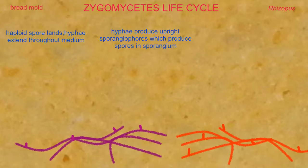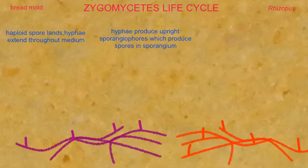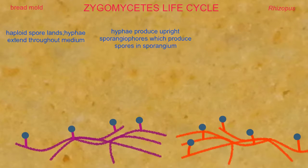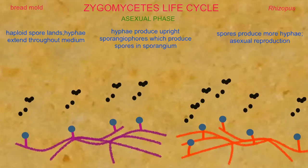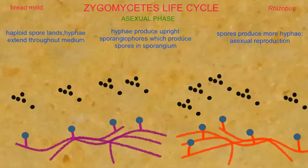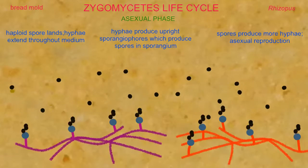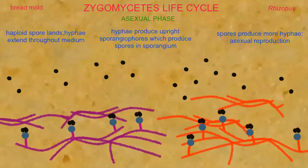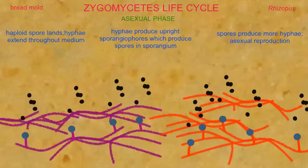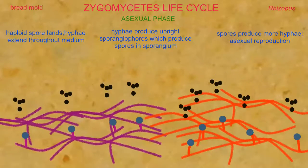The hyphae can produce erect structures known as sporangiophores, which then produce sporangia, wherein haploid spores are produced. These are produced asexually, and when they are released, they will sprout to form additional haploid hyphae, which are clones of the original.